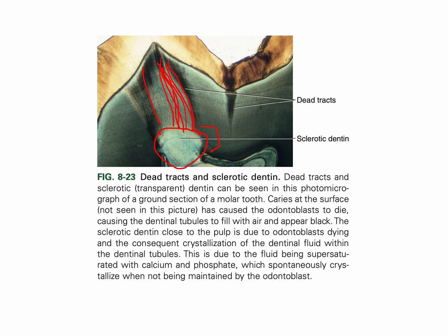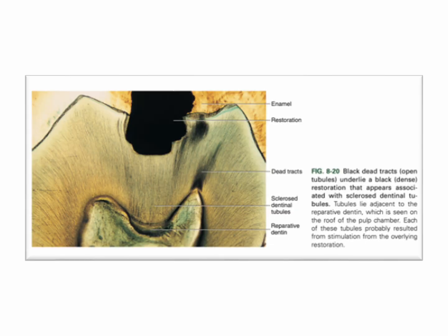These are called dead tracts. Similarly, you can see empty tubules that look black — these are dead tracts. The odontoblasts here are dead; the tubules are totally occluded to prevent anything from getting inside the pulp; and the tubules above are empty and filled with air in the section, so they look black. In this slide you can see a restoration, indicating there was a carious lesion, with tracts filled with air looking black and some reparative dentine.